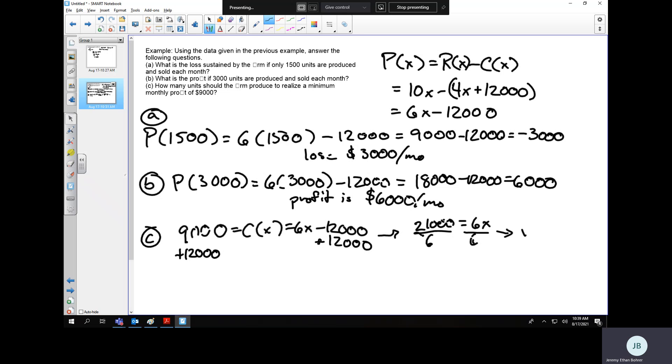And get X equals 3,500 units. So if we want to make $9,000, we need to make 3500 units and sell them. So if you have any questions on these problems, let me know.